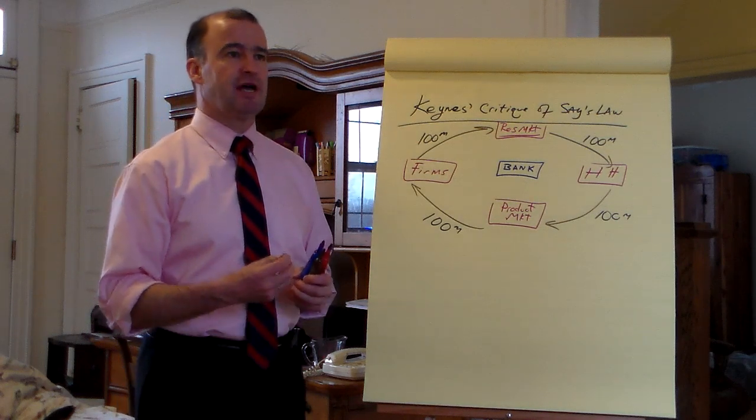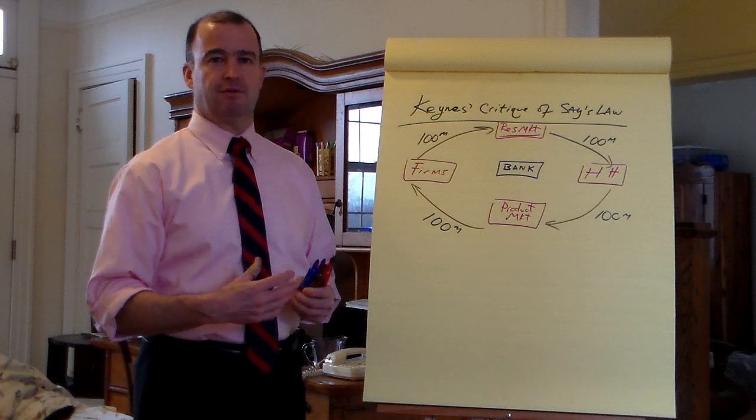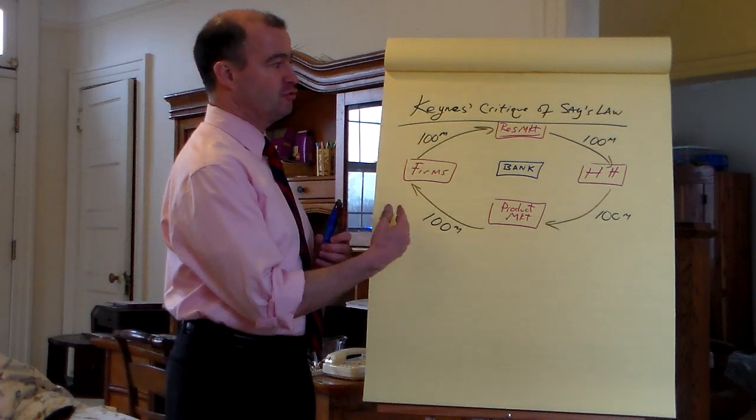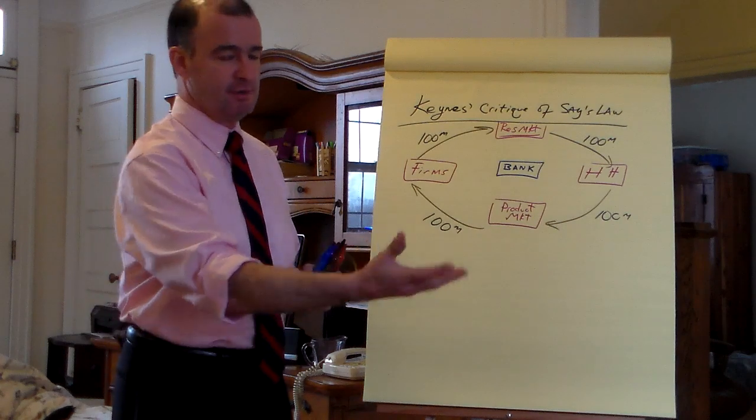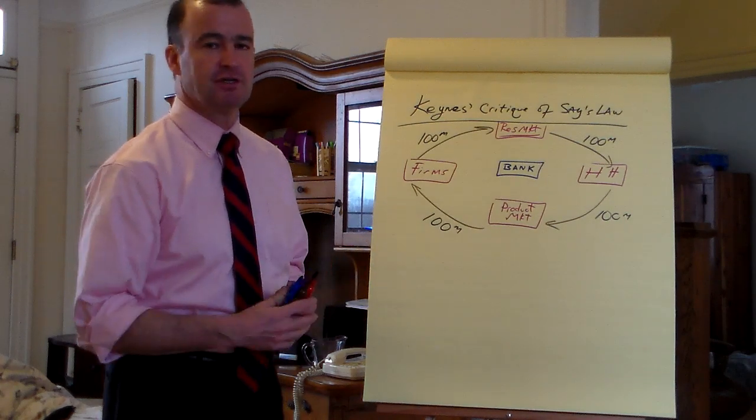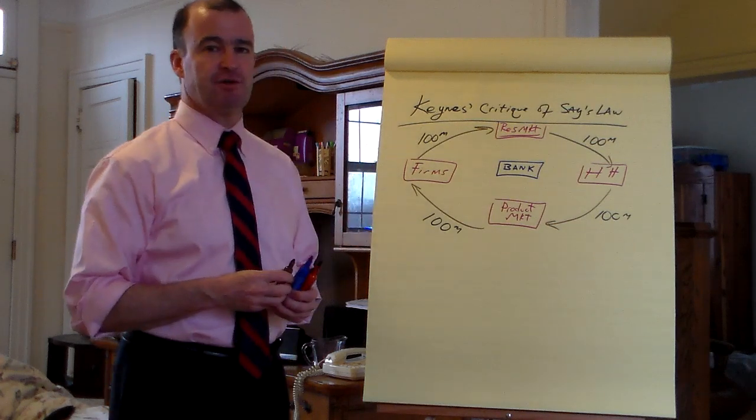Say basically created a link between saving, interest rates, and investment so that the interest rate would ensure new investment anytime saving would increase. That idea relied on the idea that households could contribute to the banking system. Households save more, the banks have more, the interest rates go down. Keynes tries to go right to that very point.